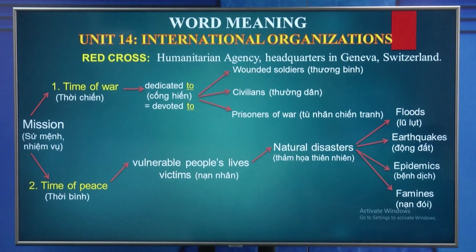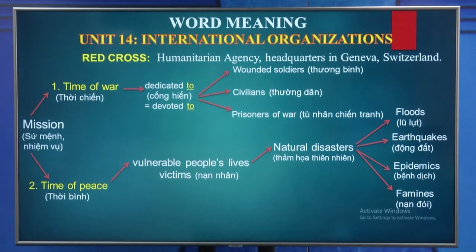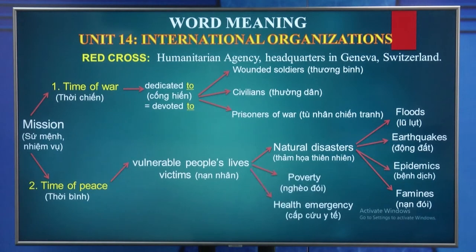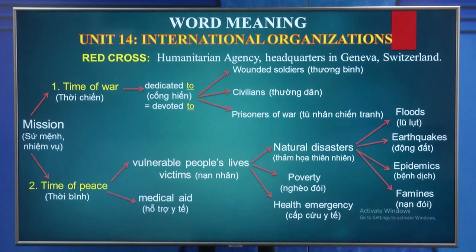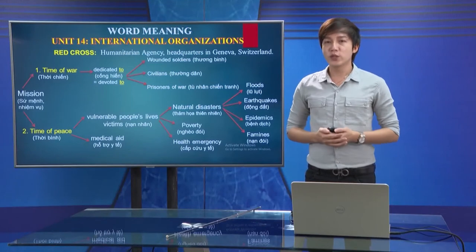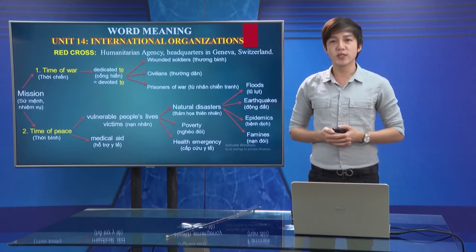Ở thời bình thì tổ chức này đã tập trung cải thiện cuộc sống cho những người dễ bị tổn thương là nạn nhân của các thảm họa thiên tai, chẳng hạn như lũ lụt, động đất, bệnh dịch và nạn đói. It also helps them to escape from poverty and supply health emergency. Moreover, it gives medical aid.